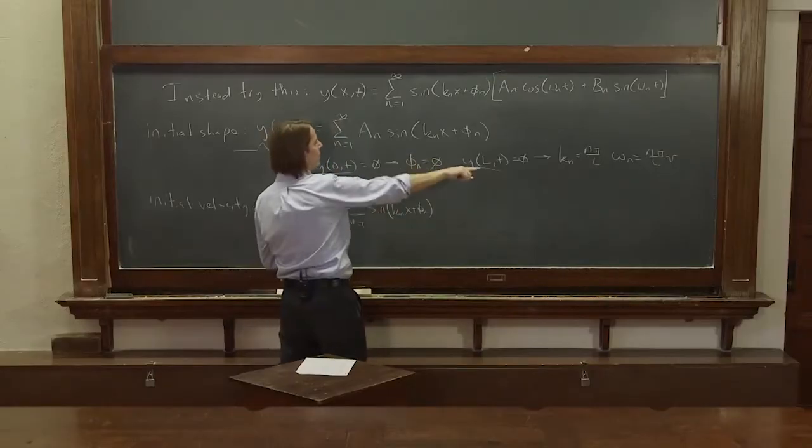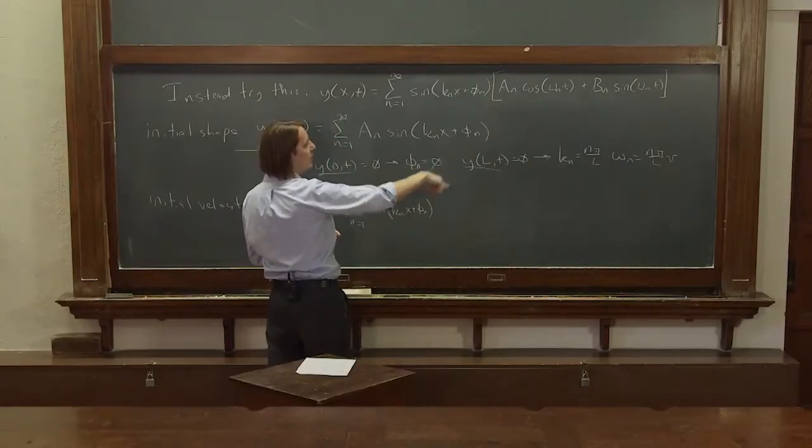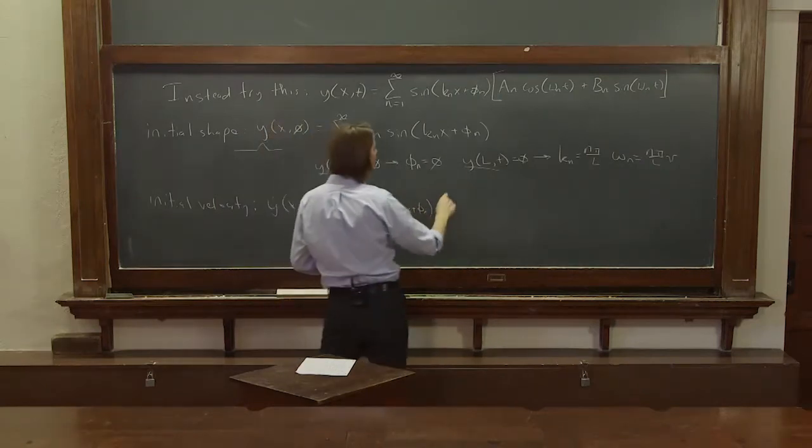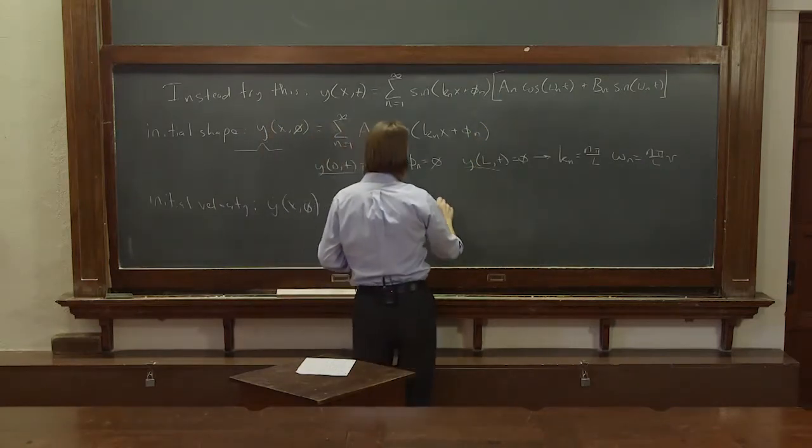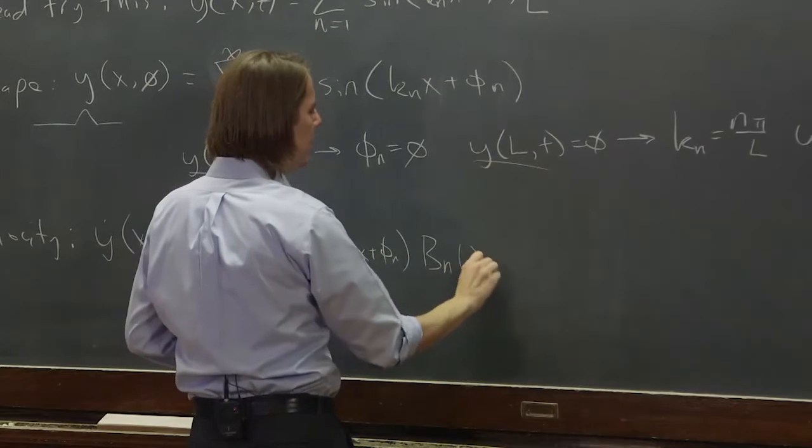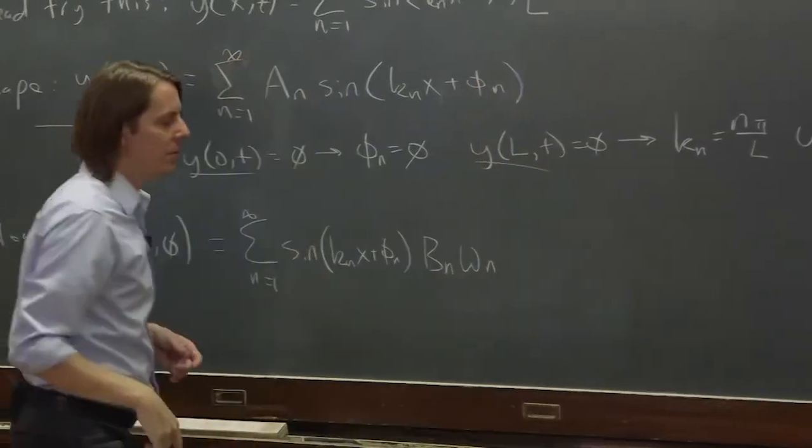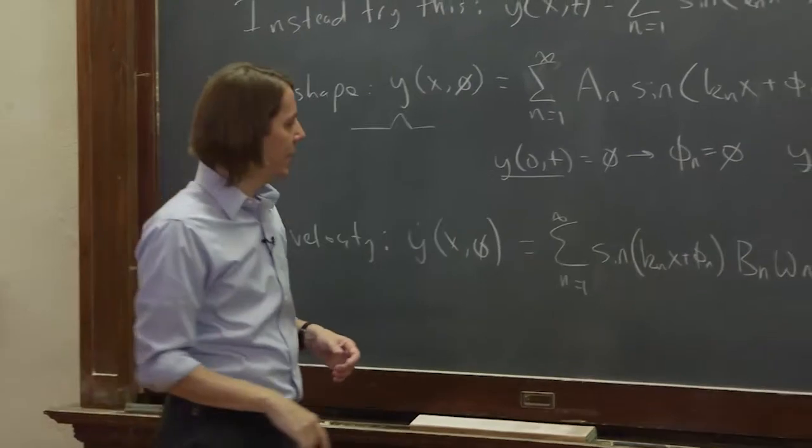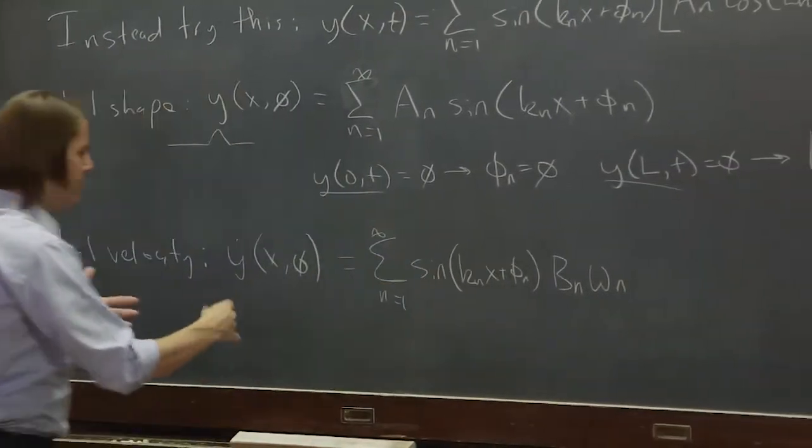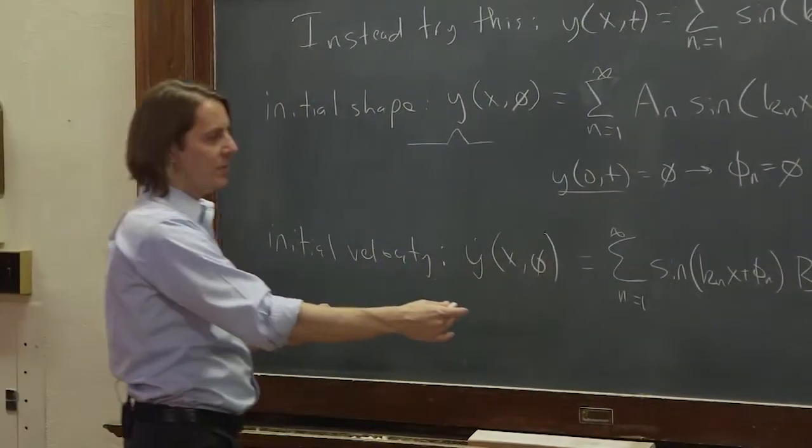And we get those from here again. We know k_n is really nπ/L and φ is 0. But what we're left with here is b_n ω_n, and then the cosine of 0 is 1. And then this is really just doing Fourier's series again.